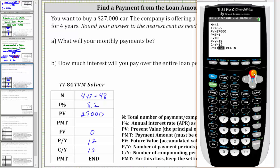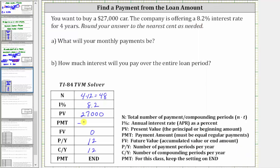Now we go back up to the payment row. To solve for payment, we press Alpha, Enter. Notice how this amount is negative — this indicates it is the amount you have to pay each month. To the nearest cent, that is $661.69. So your monthly payment will be $661.69.